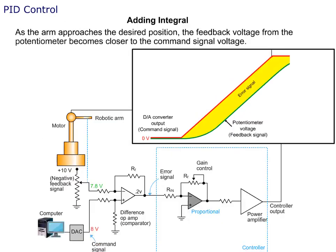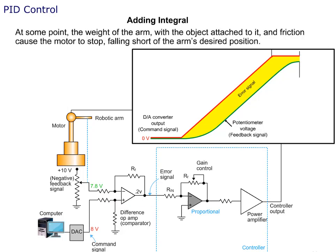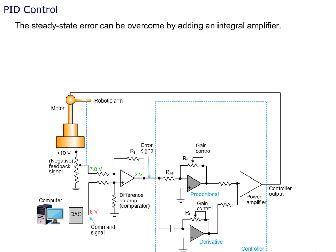As the arm approaches the desired position, the feedback voltage from the potentiometer becomes closer to the command signal voltage. As the feedback voltage approaches the command signal, the error signal produced by the difference op amp becomes smaller, causing the arm to slow down. At some point, the weight of the arm with the object attached to it and friction cause the motor to stop, falling short of the arm's desired position. When the command signal voltage and the feedback signal voltage are not the same, a condition called a steady-state error exists, causing the difference op amp to create a small steady voltage.